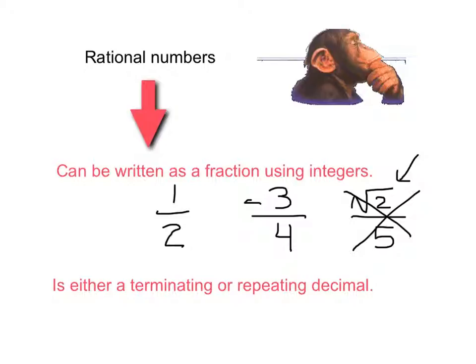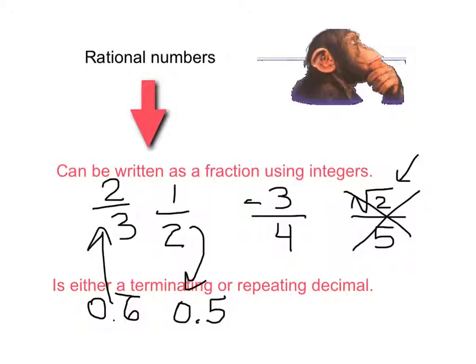Our other definition of a rational number is that it's either a terminating or repeating decimal. So if it can be written as a fraction using integers, then it can be written as a terminating or repeating decimal. One half as a decimal is 0.5 — that's an example of a terminating decimal, it ends. Now, repeating decimals keep going and going; for instance, 0.6 repeating would be considered a rational number, and we could write that as a fraction — 0.6 repeating is equal to two-thirds. So if a number can be written as a fraction using integers, it will also be a terminating or repeating decimal. We call those numbers rational numbers.